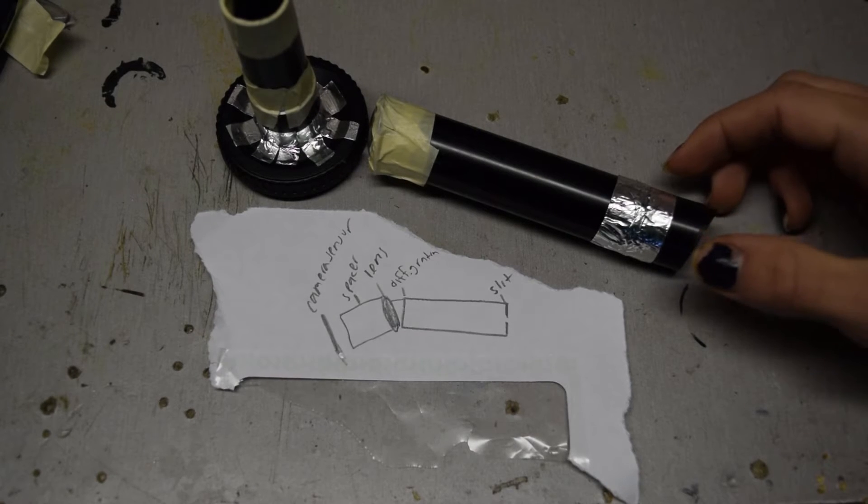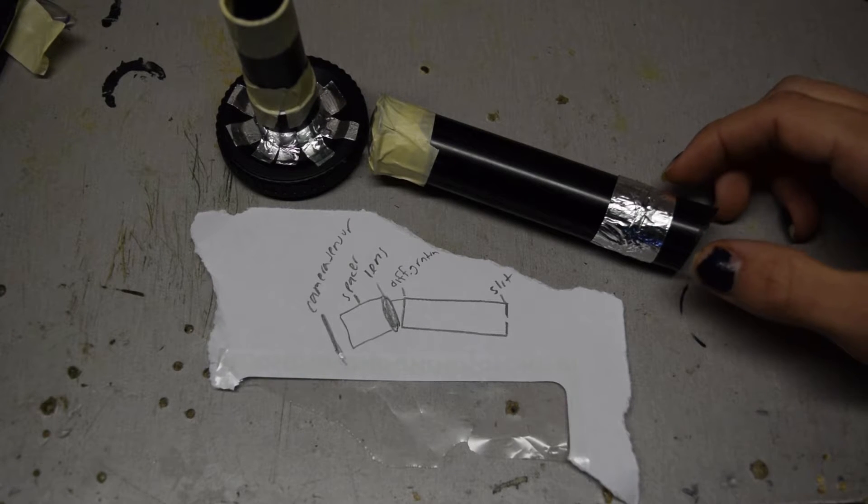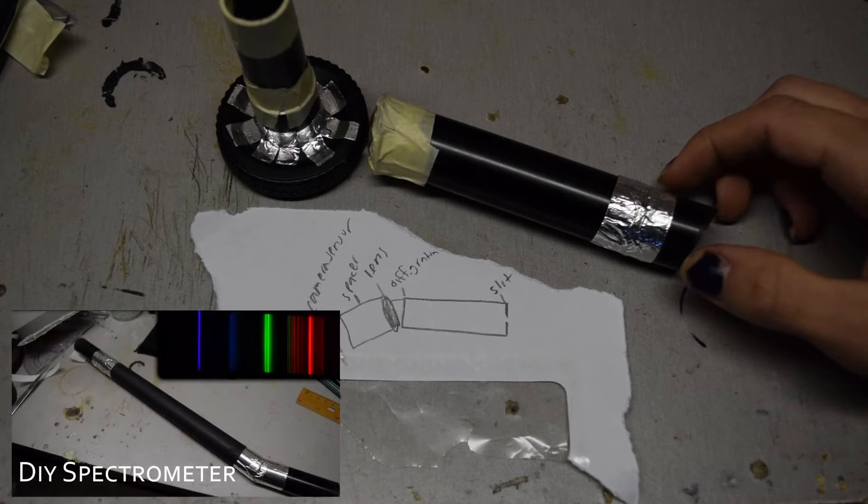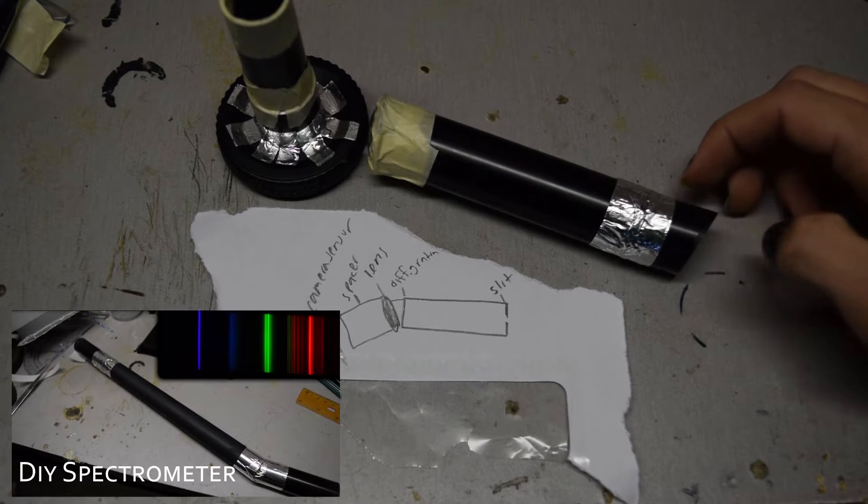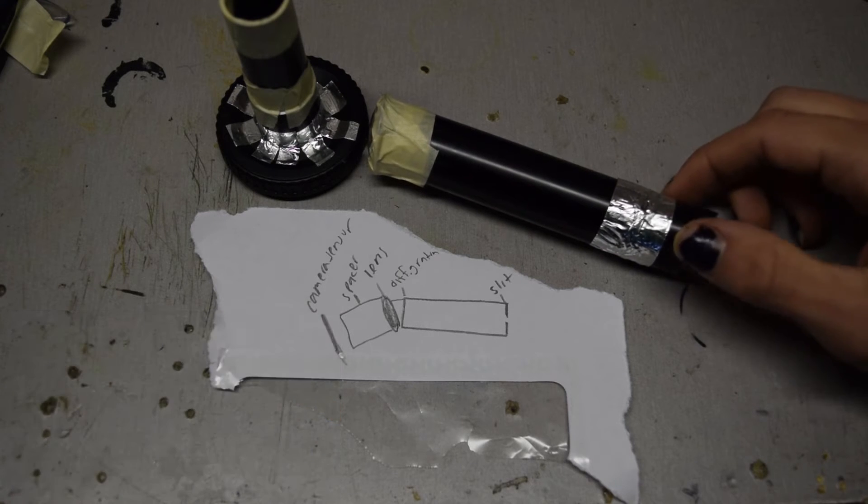In this video I'm going to be showing how I adapted my handheld spectroscope from a previous video into a version that can be mounted onto a digital camera.